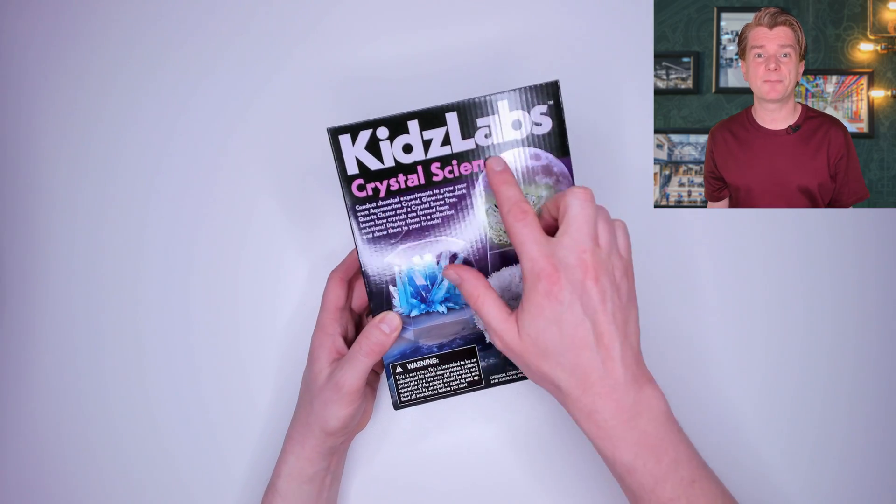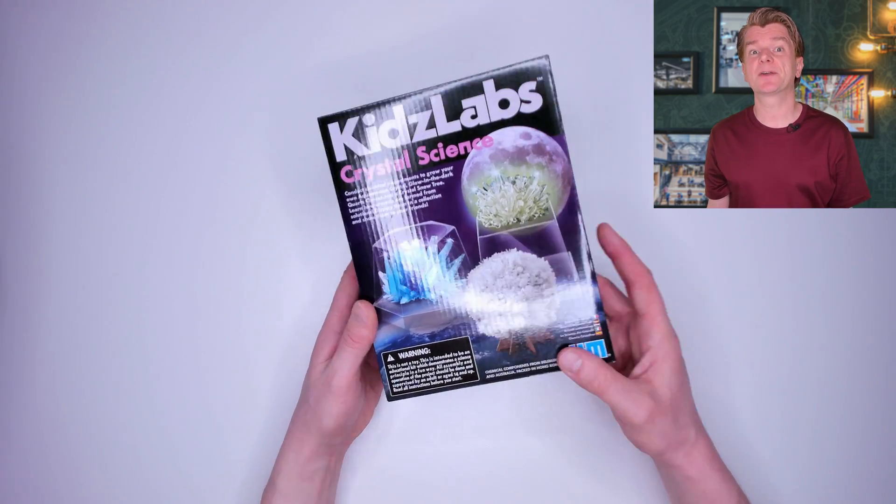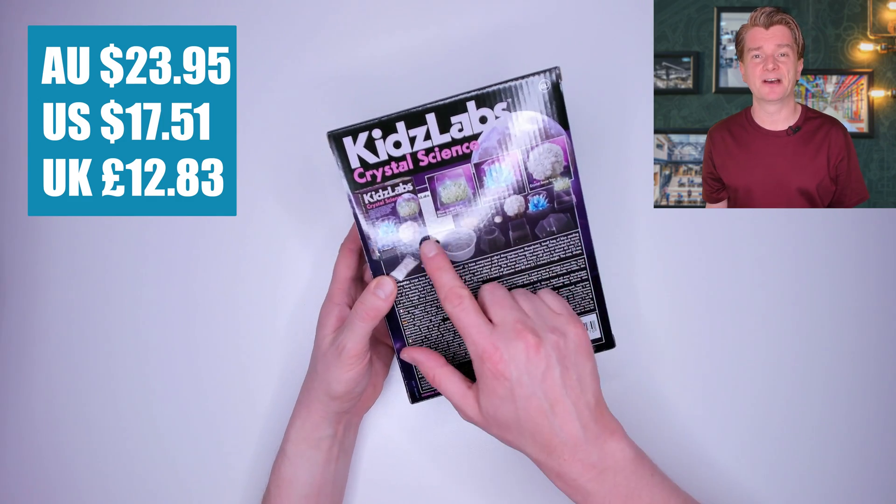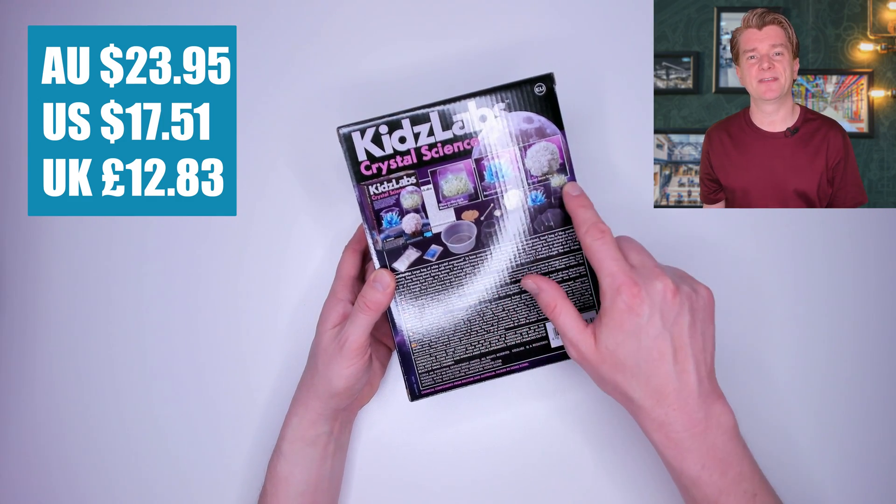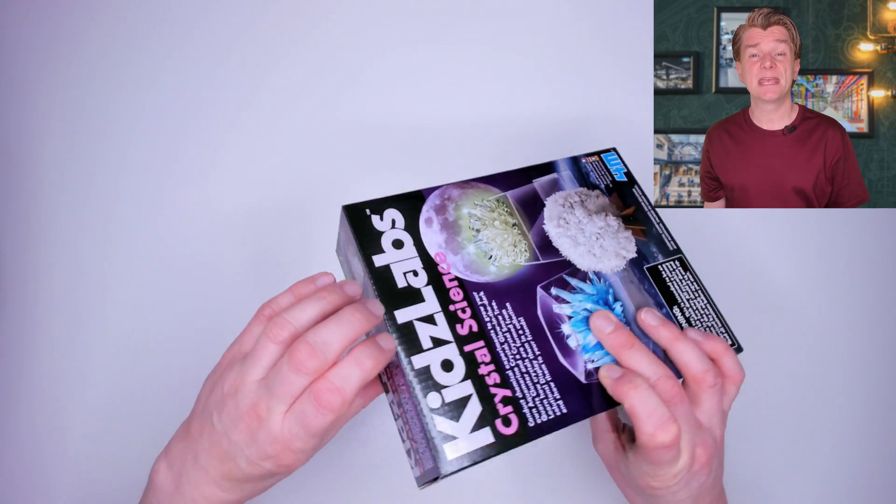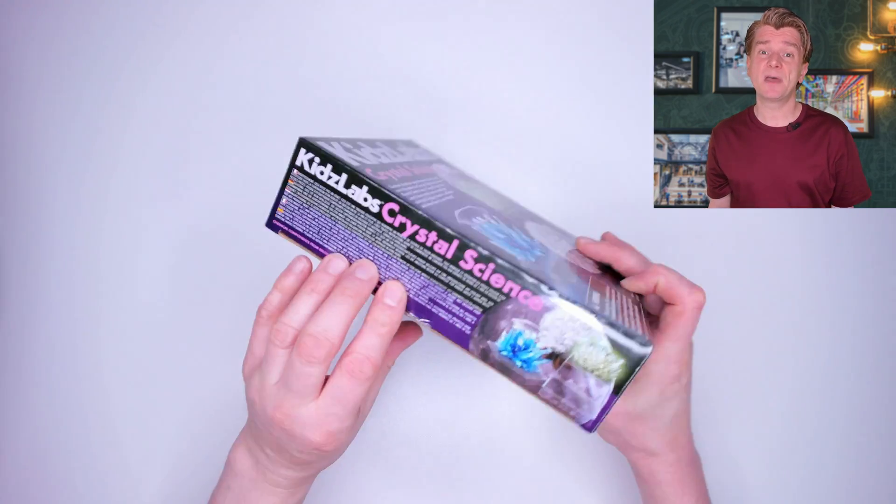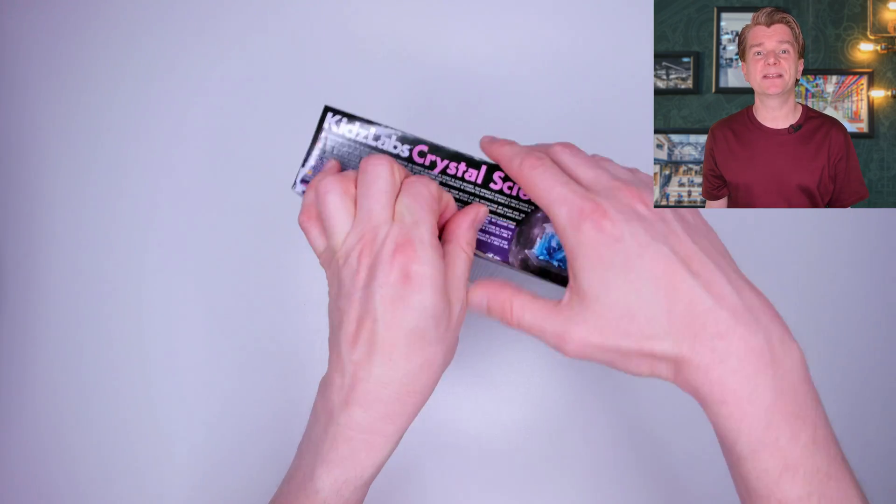Next up I've got the Kids Lab Crystal Science Kit. This one cost me $23.95 from Amazon, so quite a bit more expensive than the National Geographic one. It's got more experiments in it though, so maybe not that bad. Let's open up and see what's inside.